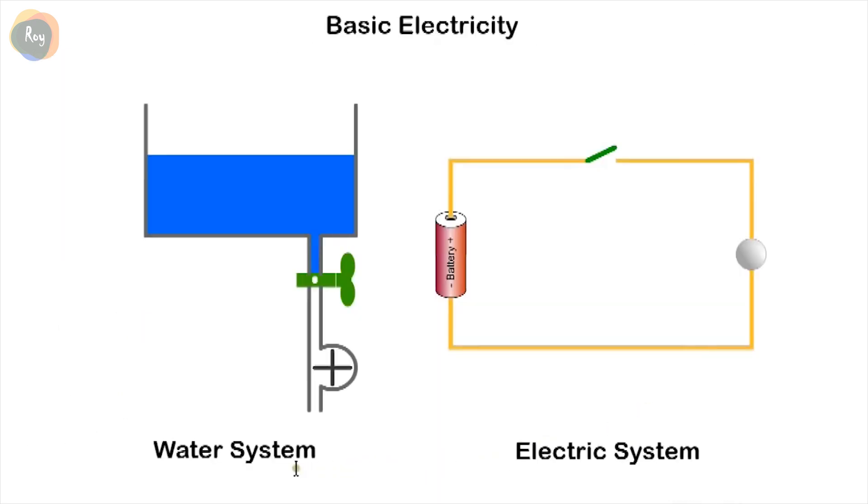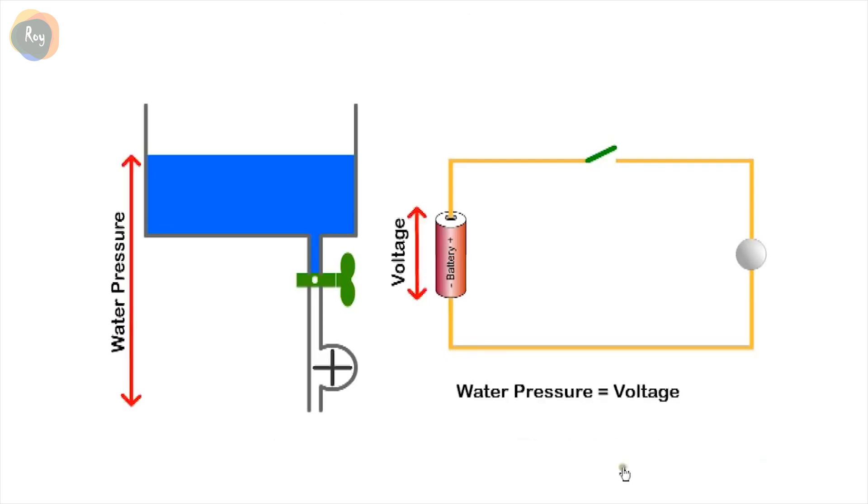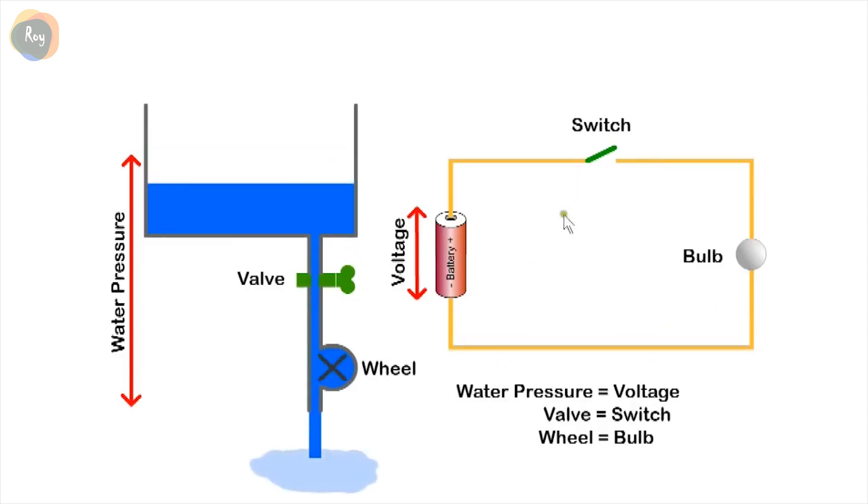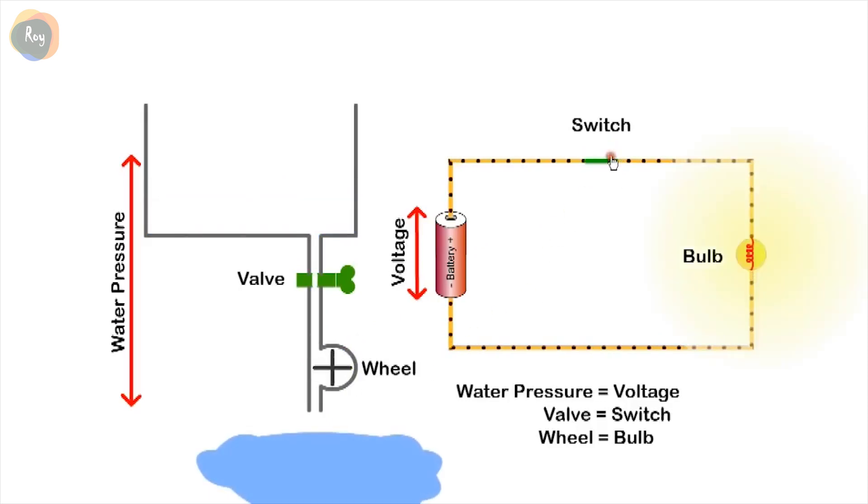We'll use an analogy with a water circuit to explain the operation of an electric circuit. The water pressure due to the height of the tank is similar to the potential difference or voltage provided by the battery. The valve is similar to the switch and the wheel is similar to the lamp, while the flow of water can be compared to the flow of current. The valve allows the water to flow which turns the wheel. The switch provides a continuous path for the current to flow and the resistance of the lamp produces heat and light. When the switch is opened, the circuit is broken and the current ceases to flow.